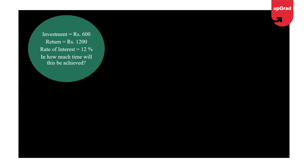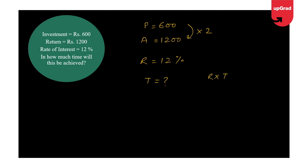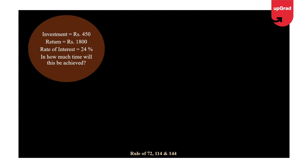Let's take a few more. Principal = 600, Amount = 1200 — it has doubled. Rate of interest is given as 12%, and I need to calculate the time. Since it is getting doubled, Rate × Time = 72. So Time = 72 ÷ 12 = 6 years. That's the answer.